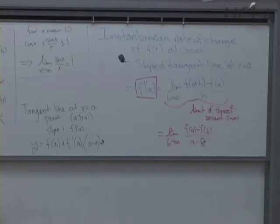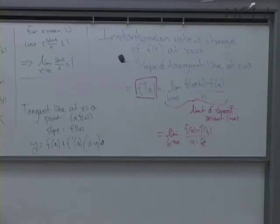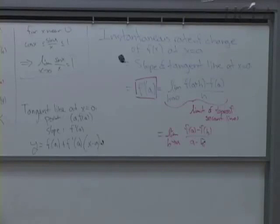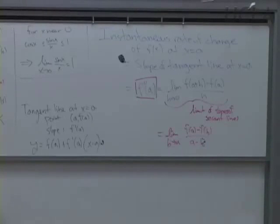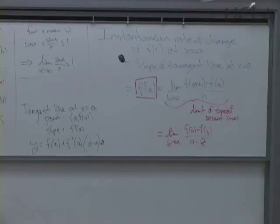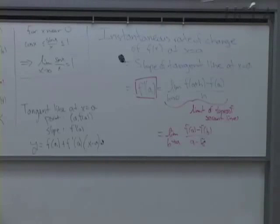There are a couple of techniques. One is we rewrite — very useful for polynomials; for example, you can expand and then factor. Another thing you can do is multiply the top and the bottom by conjugates, and multiplying top and bottom means you multiply by 1, which doesn't change anything. Today we'll also see an example of adding 0, which is useful, and 0 doesn't change anything.